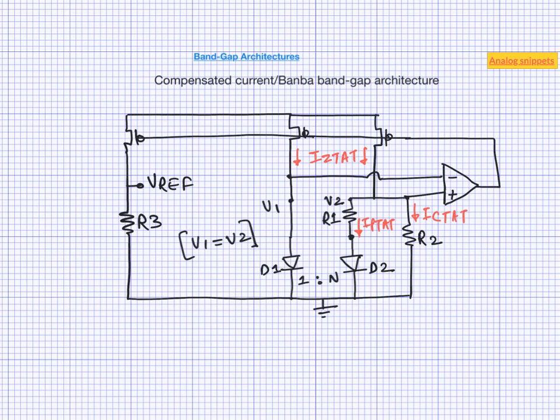The only remaining drawback is design complexity and area increase due to the amplifier, but this is not bad at all given the advantages. As supply voltages continue to reduce, BANBA has become the default bandgap architecture. In this video we have looked at three commonly used bandgap architectures, overlooking many details and design considerations that will be covered in future videos. In the very next video I will cover startup — another very important aspect of bandgap circuits. Please post your comments below and thanks for watching.